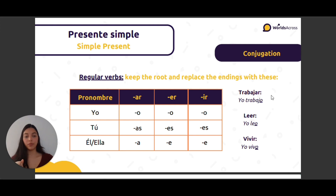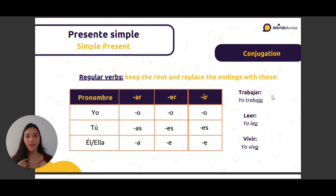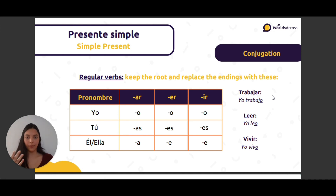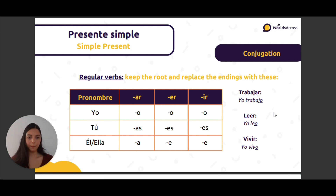For this example, we have the verb 'to work' — trabajar. This verb ends with AR, so: yo trabajo, tú trabajas, él/ella trabaja. Then leer, 'to read': yo leo, tú lees, él/ella lee.